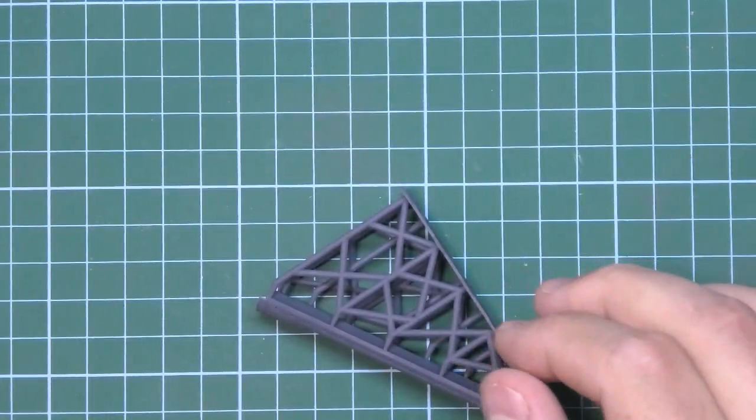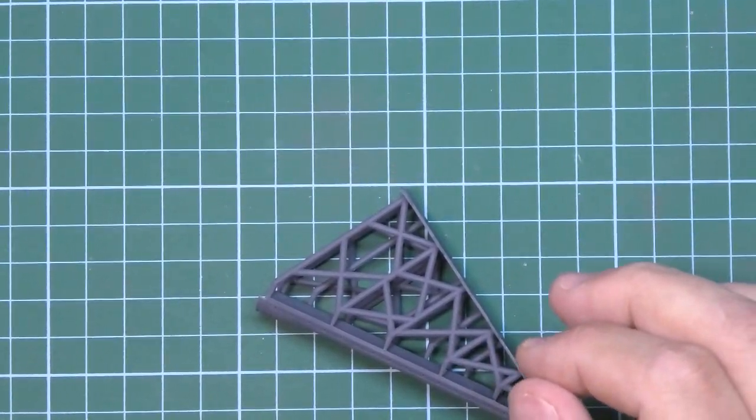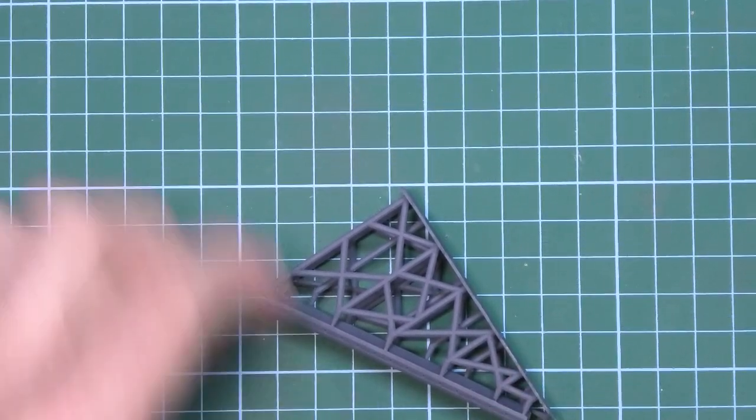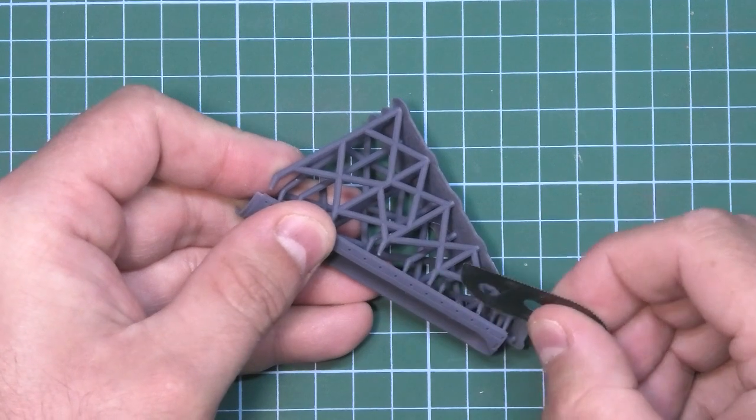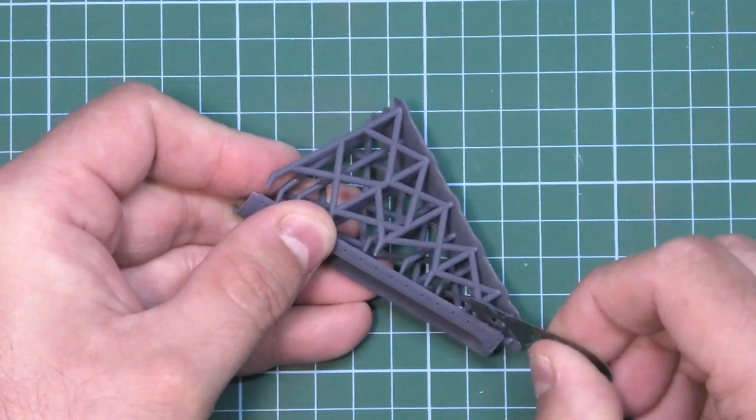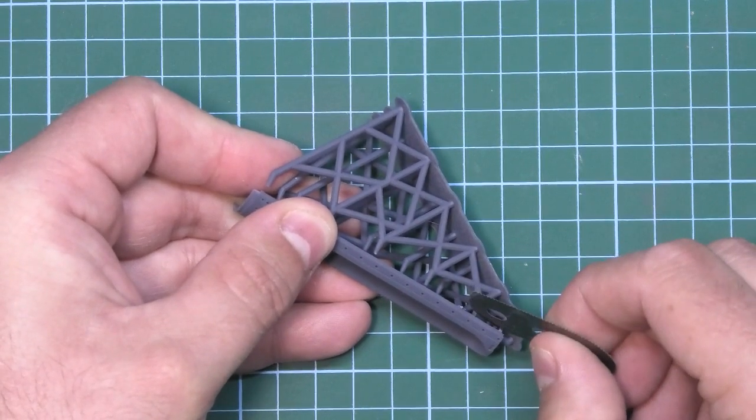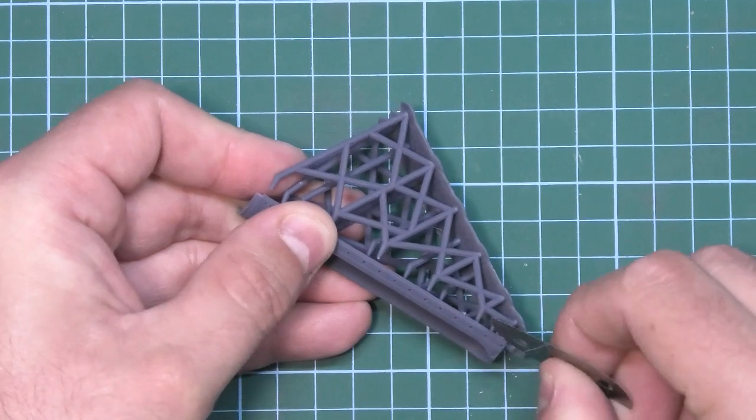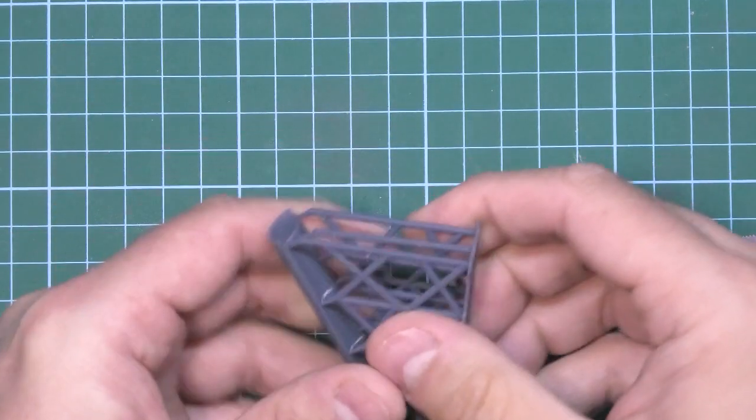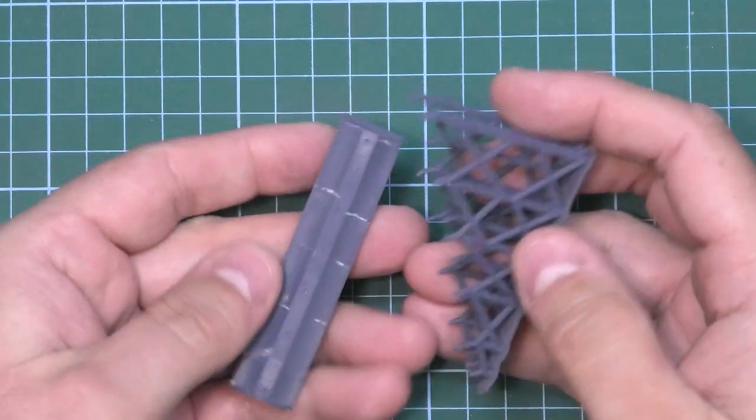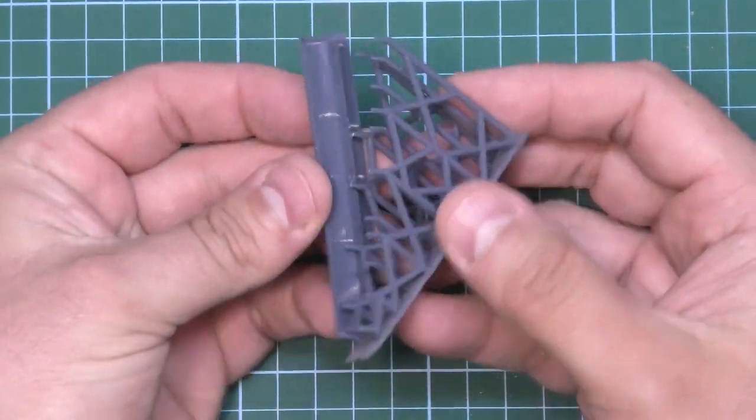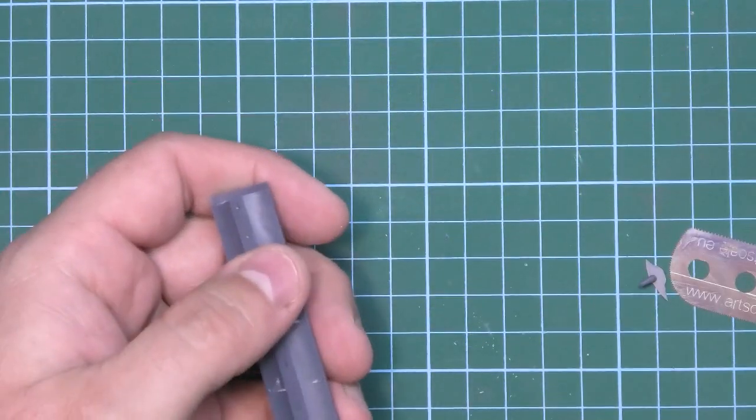You can do it like that or if you actually wanted to, there's nothing stopping you from being a little bit more gentle with it and using a saw of your choice to saw through the connections if you wanted to. But honestly, as you can see, it will just snap away like so.